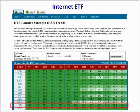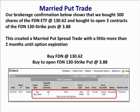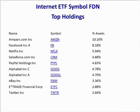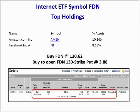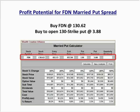Here's one more example — this is for FDN, the Internet ETF. The top holdings include Amazon, Facebook, Netflix, and Salesforce. The ETF had a 98% relative strength. We waited for a pullback, then purchased FDN at $130.62 and purchased the 130 strike put at $3.88. This created a married put trade. Let's take a look at the profit potential for FDN: we bought FDN at $130.62 and bought the 130 strike put at $3.88.